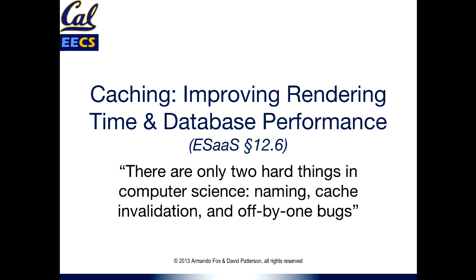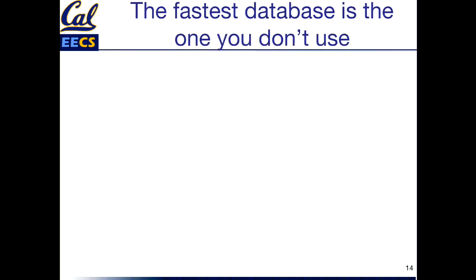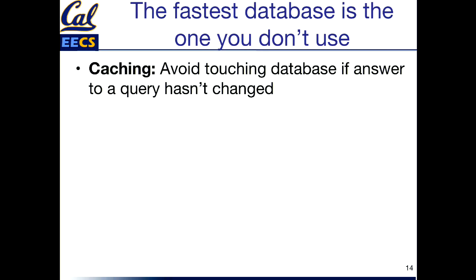And again, even if you outgrow the platform as a service solution, you're still going to have to worry about this if you get big enough that you've got to roll your own. So basically the observation behind caching is the fastest database is the one that you never have to query at all because you already have the information you need somewhere else.